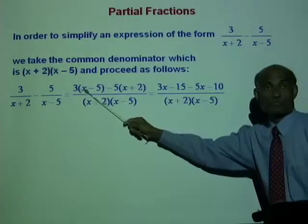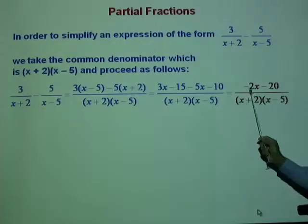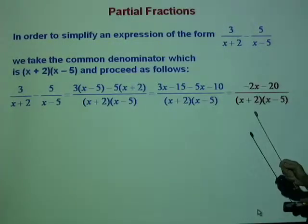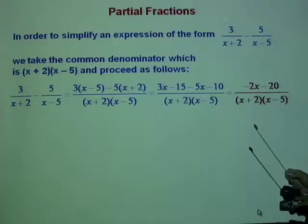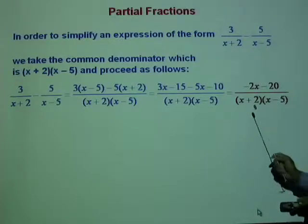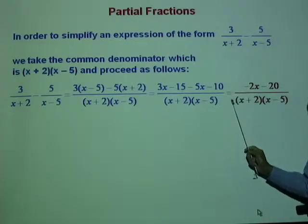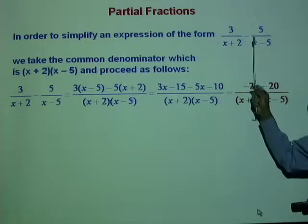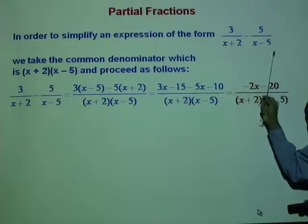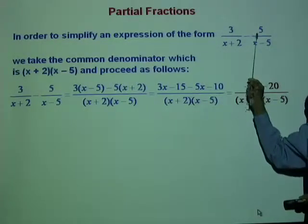Just expand them: negative 2x minus 20, all over x plus 2 times x minus 5. This is the result of simplifying this expression.